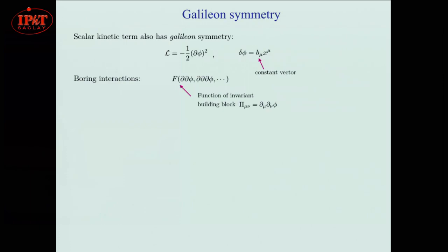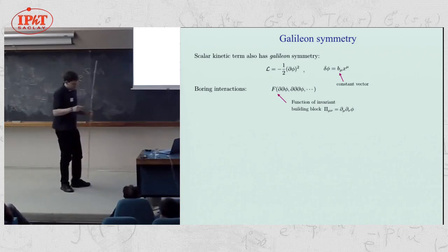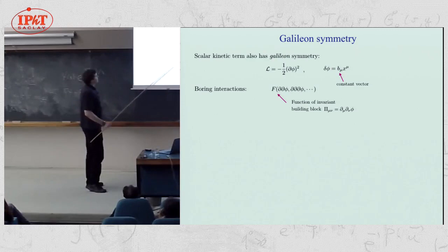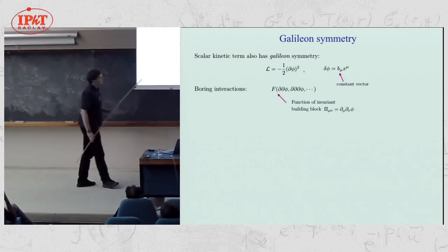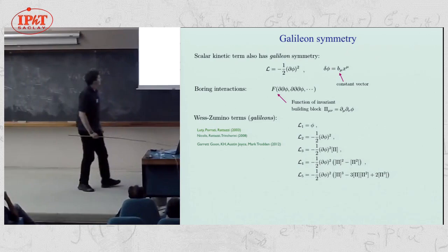If we look at the kinetic term, it's also invariant under Galilean symmetry, which shifts by a term that's linear in the space-time coordinate. We can write down boring interactions made out of an invariant building block — two derivatives of the scalar — but there's also a finite set of interactions which are Wess-Zumino terms. They contain fewer than two derivatives per field and are not made out of the invariant building block. These are the Galileons.